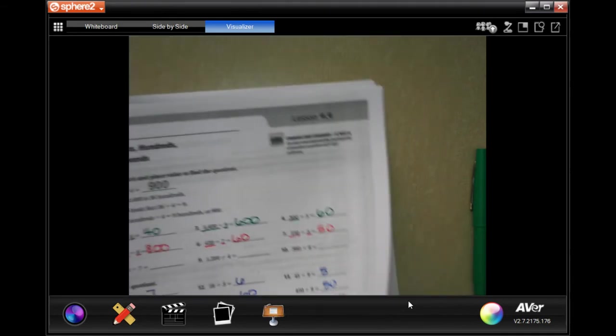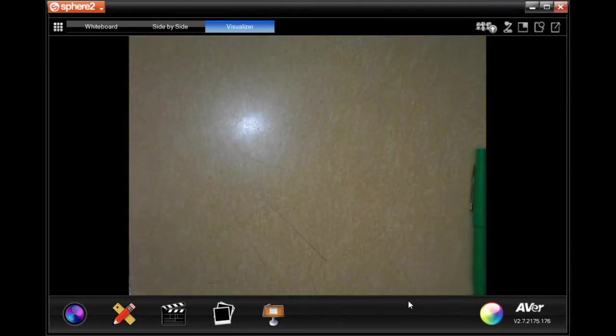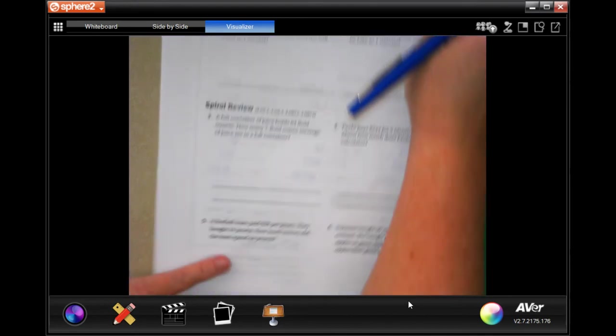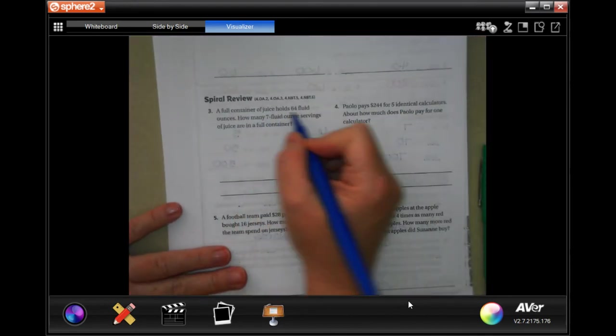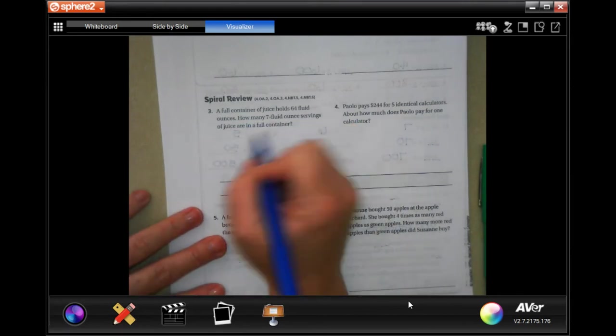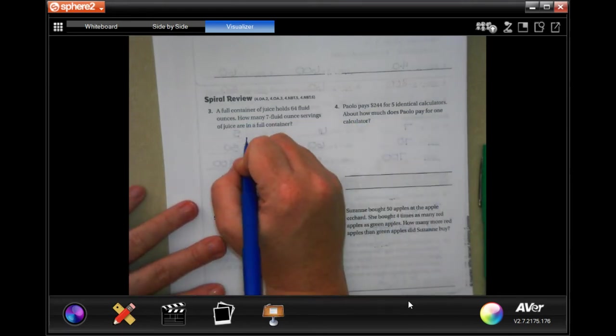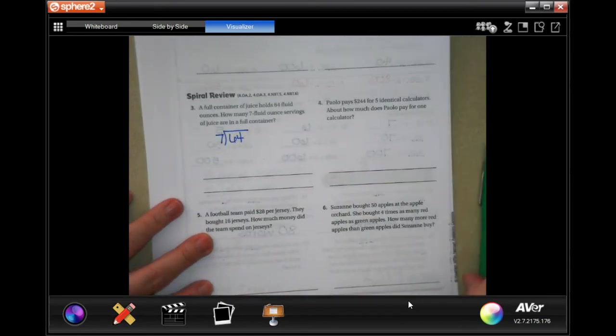We're gonna go over to the back where you guys are gonna do the lesson check because you're amazing. We're gonna go down and do the spiral review. A full container of juice holds sixty four fluid ounces. How many seven fluid ounce servings of juice are in a full container? Well, sixty four we're going to divide that by seven ounces.